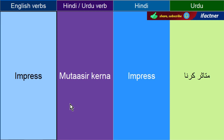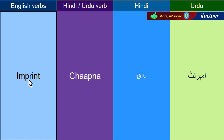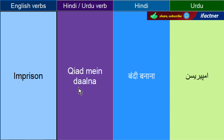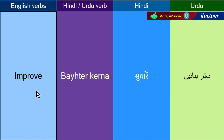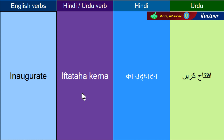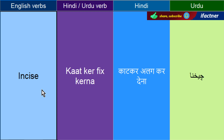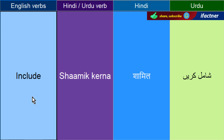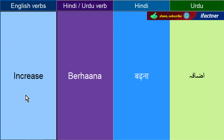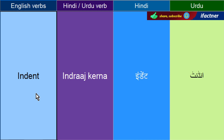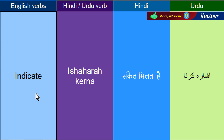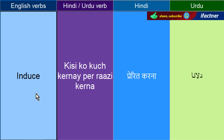Mutasir kerna — English mein kehtay hain Impress. Chaapna — Imprint. Kaid mein daalna — Imprison. Behter kerna — Improve. Iftataah kerna — Inaugurate. Kaat ker fix kerna — Incise. Shaamil kerna — Include. Badaana — Increase. Indraaj kerna — Indent. Ishaara kerna — Indicate. Kisi ko kuchh kerne per aazi kerna — Induce.